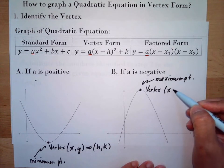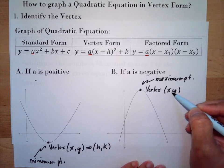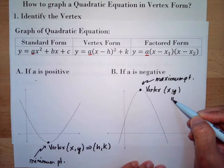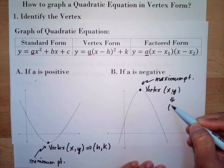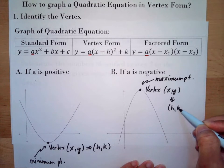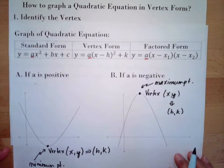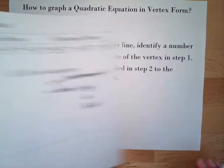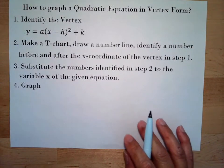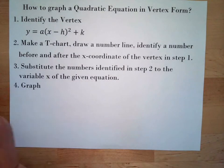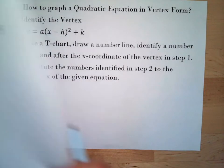We can also write the vertex as (h, k). Now let's do the example.